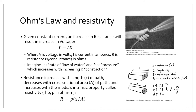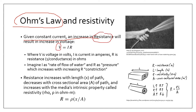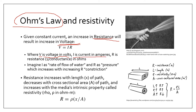Now let's talk about Ohm's Law and resistivity. We need Ohm's Law to obtain resistance from voltage and current readings. The general relationship is: an increase in resistance results in an increase in voltage — the higher the resistance, the higher the potential created. V is voltage in volts, I or current is measured in amperes, and R is resistance — the inverse of conductance — measured in ohms.